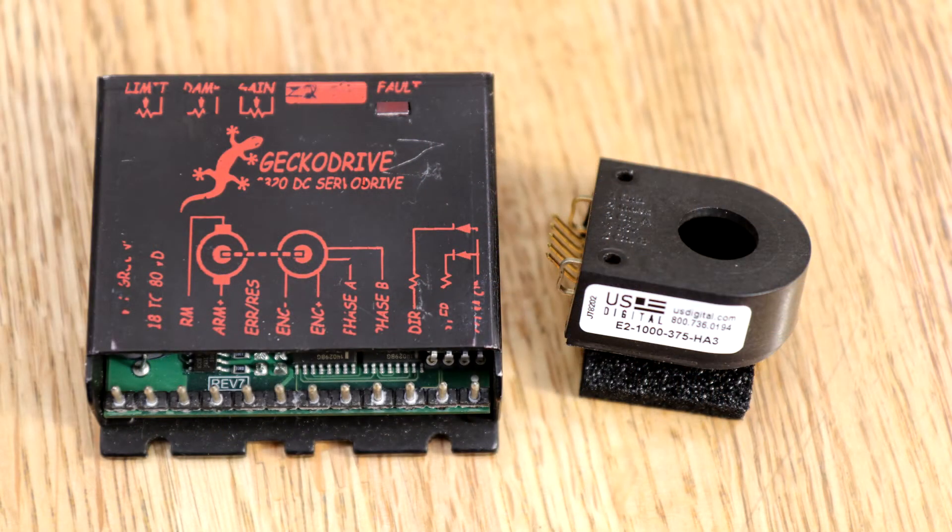Some say servo motors are better than stepper motors because servo motors have encoders, but the servo motor has an encoder because of an inherent need by the servo drive.